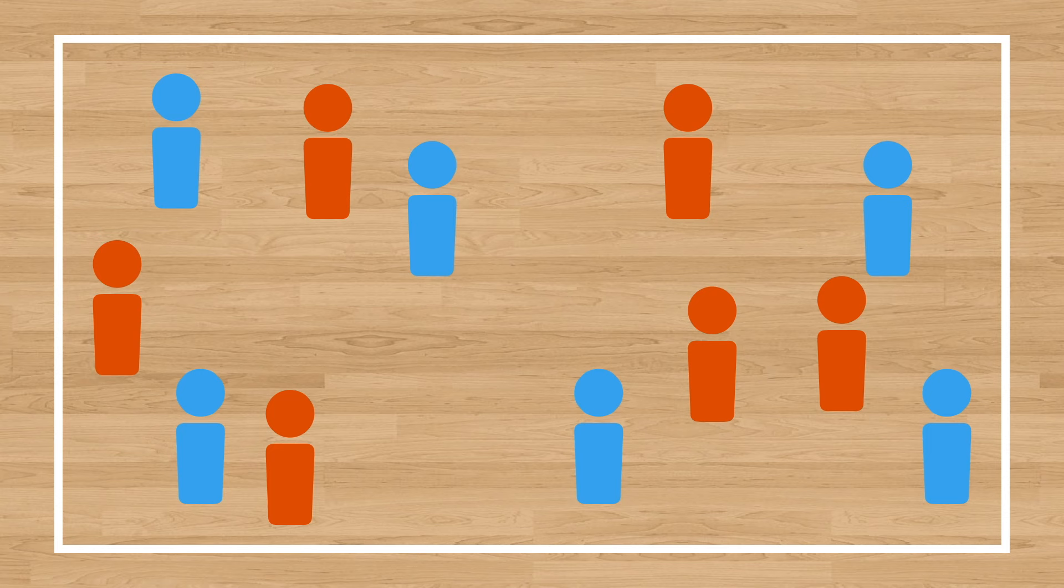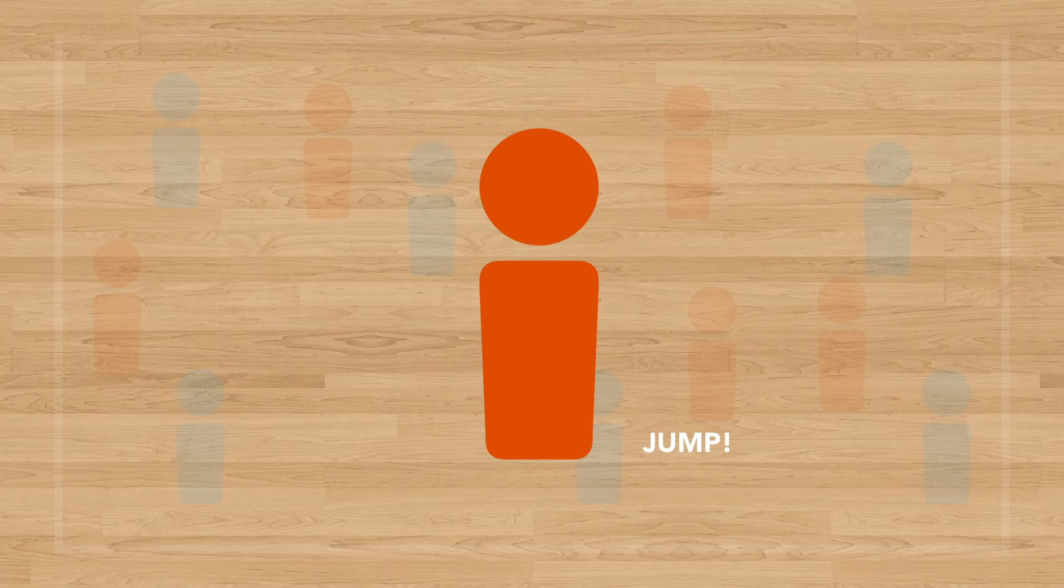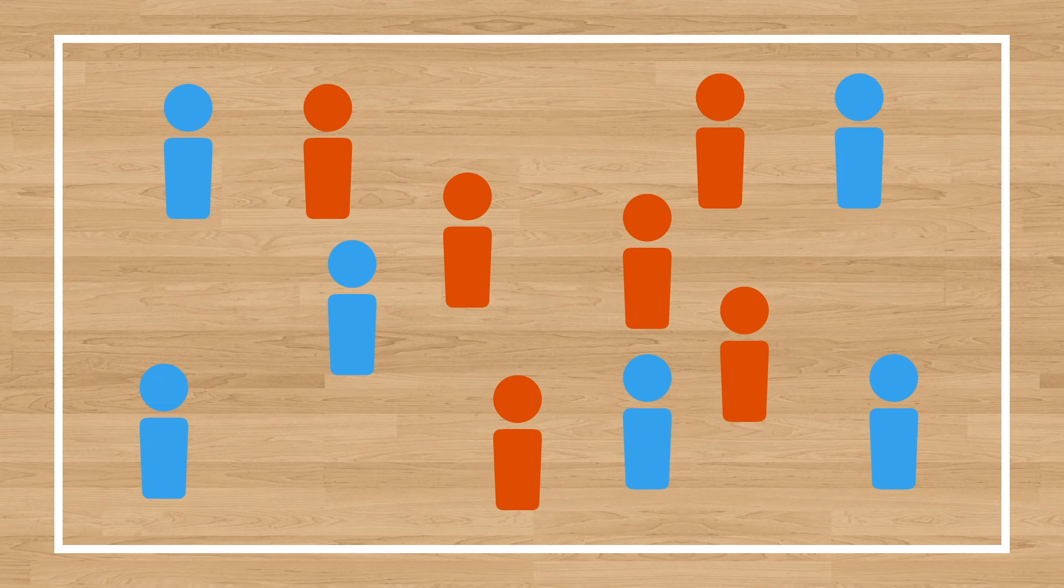Once you have your teams, have your students get into a scattered formation and inform them that each team will have to move in their own unique way. The frogs are going to be practicing their hopping, taking off and landing on one foot, whereas the toads are going to be practicing jumping, taking off and landing on two feet. Have the students practice their skills for a couple of minutes and make sure that you have the teams switch roles so that each team gets to practice both skills.